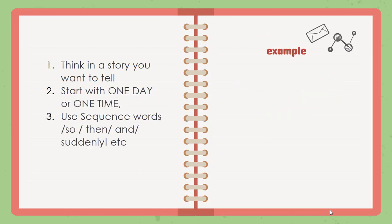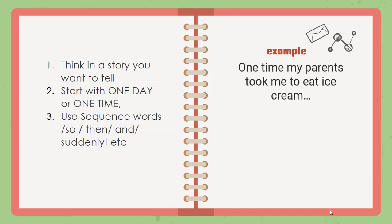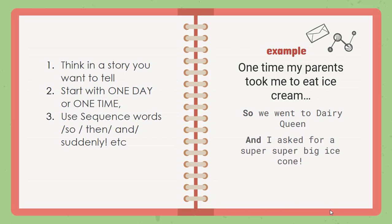Number three: use sequence words — utiliza sequence words. Puedes utilizar 'so,' 'then,' 'and,' 'suddenly.' For example, continuing from my beginning: 'One time, my parents took me to eat ice cream. So we went to Dairy Queen and I asked for a super big ice cream cone. Suddenly, my ice cream was on the floor.' Y si te fijas, tu teacher está utilizando words in past.